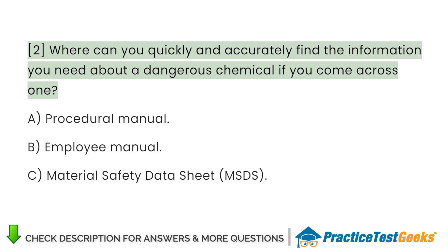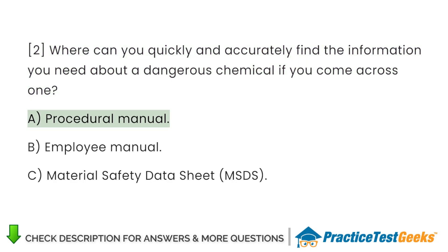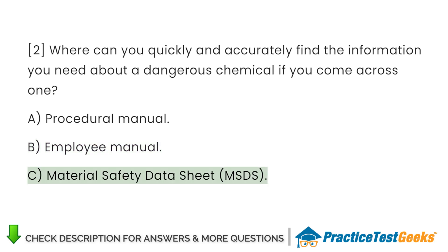Where can you quickly and accurately find the information you need about a dangerous chemical if you come across one? A. Procedural manual. B. Employee manual. C. Material safety data sheet, MSDS.